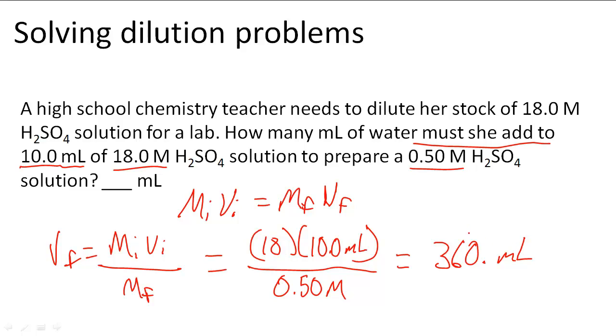So we know it's 360 milliliters, but we have to subtract 10 milliliters from this because that's the total final volume, but we already had a volume at the beginning. So we have to subtract that 10 to see how much she has to add to the solution.